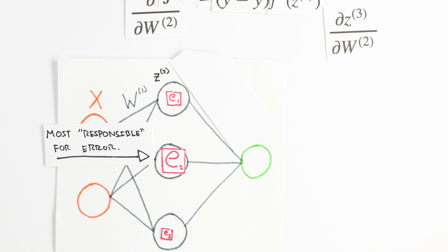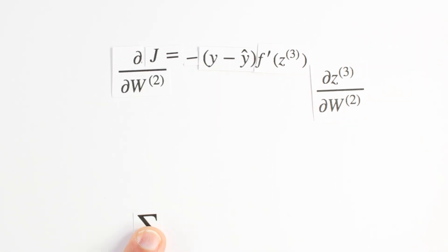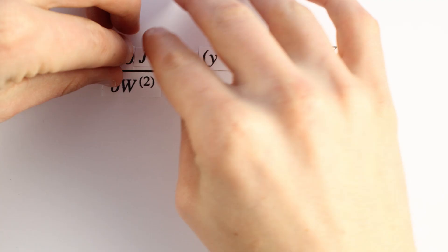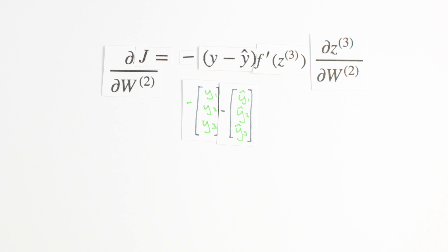We need to be careful with our dimensionality here, and if we're clever, we can take care of that summation we got rid of earlier. The first part of our equation, y minus y hat, is of the same dimension as our output data, 3 by 1. f prime of z3 is of the same size, and our first operation is a scalar multiplication. Our resulting 3 by 1 matrix is referred to as the back-propagating error delta3.